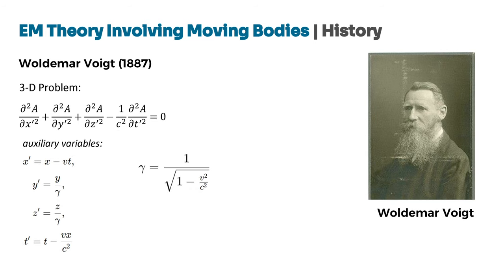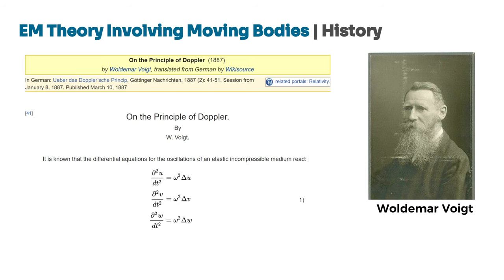Voigt extended this approach to three-dimensional problems. For the 3D case, the auxiliary variables are defined as shown in the slide, and he introduced the gamma factor. The resulting wave equation for the 3D problem, when rewritten using these auxiliary variables, describes wave propagation in a frame of reference where the observer is at rest. In his paper titled 'On the Principle of Doppler,' Voigt applied this transformation to both light and sound waves. By introducing these auxiliary variables, Voigt demonstrated that the wave equations for a moving observer could be transformed into wave equations for an observer at rest, simplifying the analysis and making it possible to study the effects of motion on wave propagation.